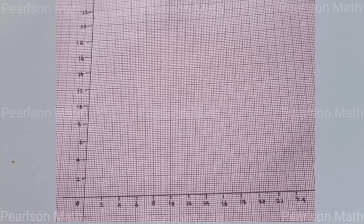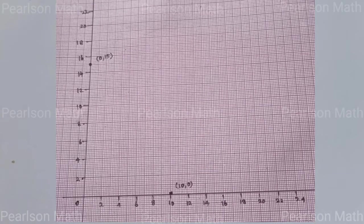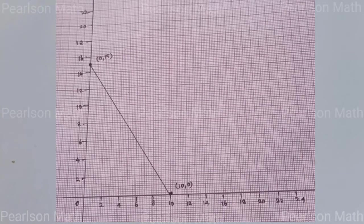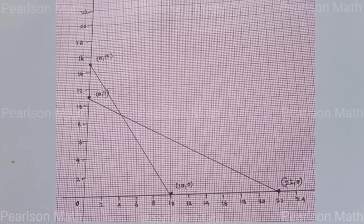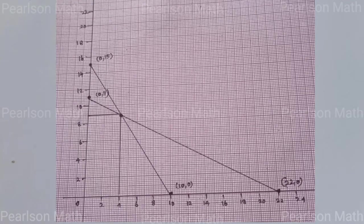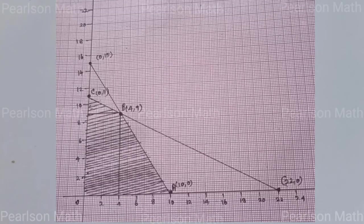Now draw the graph. First draw y-axis and x-axis, starting with 22 units. First equation: (0, 15) and (10, 0), join that line. Second equation: (0, 11) and (22, 0), join that. Next intersection point (4, 9). Label points O, A, B, C for the feasible region.